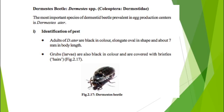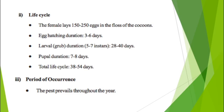Another pest discussed in this lecture is the Dermestes beetle. It is a pest of silkworm and belongs to order Coleoptera. Both adult and larvae are black in color. The female lays around 150 to 250 eggs in the floss of the cocoon, and the total life cycle lasts 38 to 54 days.